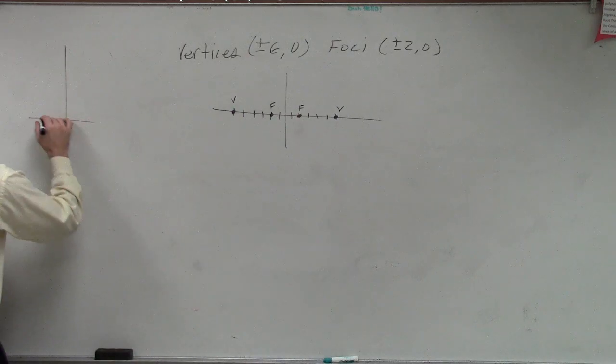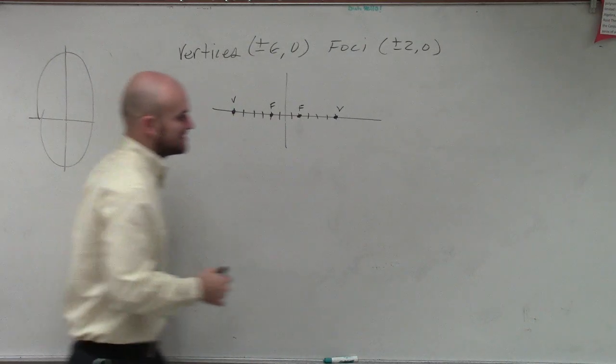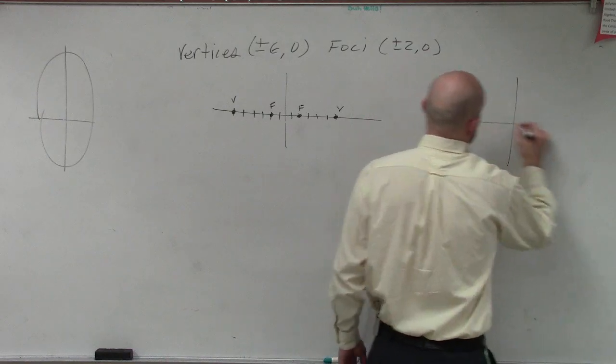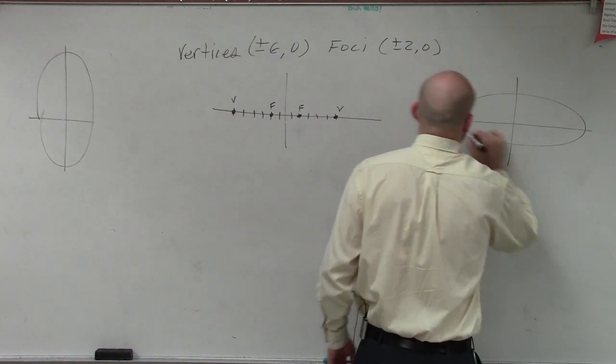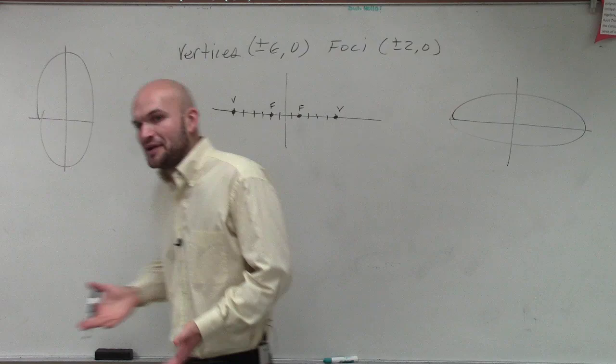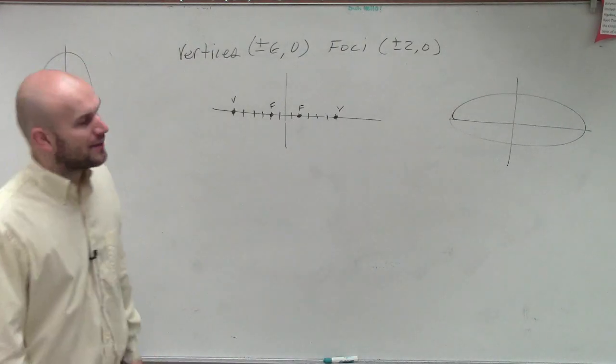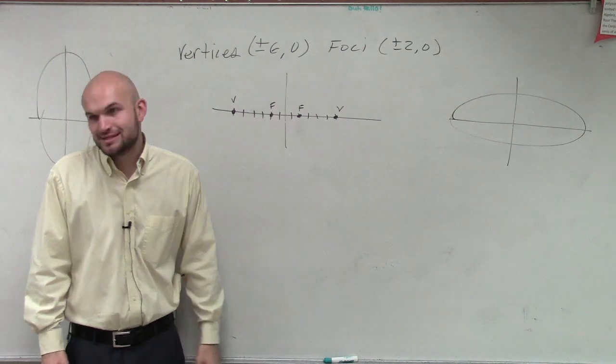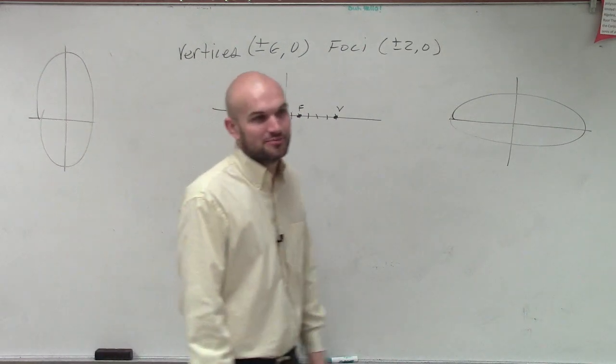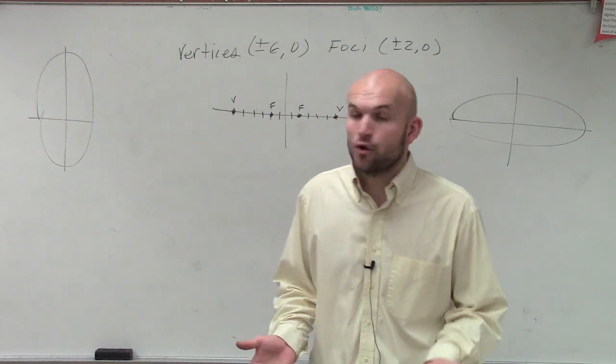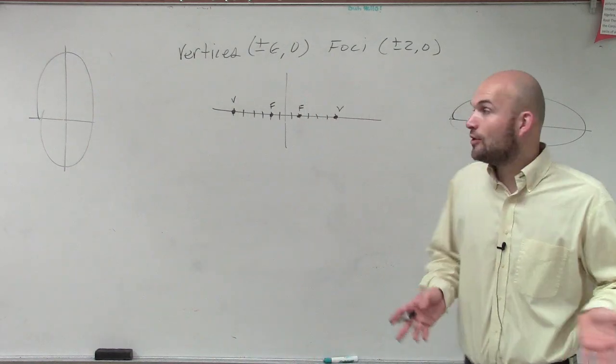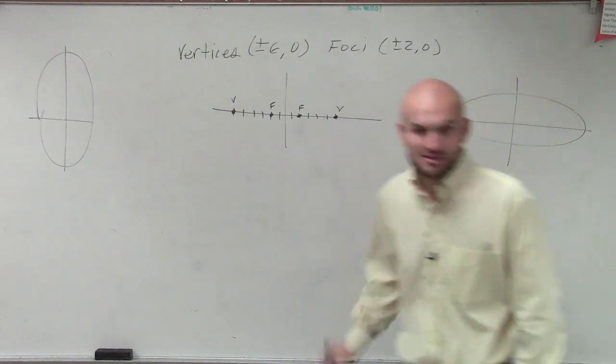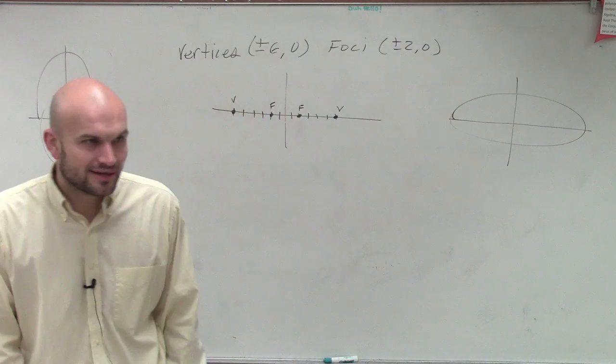Now, remember ladies and gentlemen, there's only two ellipses that we're dealing with. One that's vertical and one that's horizontal. Now, just out of, I don't know, a random guess. If you were to say this is, these are the points of one of these ellipses, would you recognize it to be an ellipse where your major axis is vertical or where your major axis is horizontal? Horizontal.